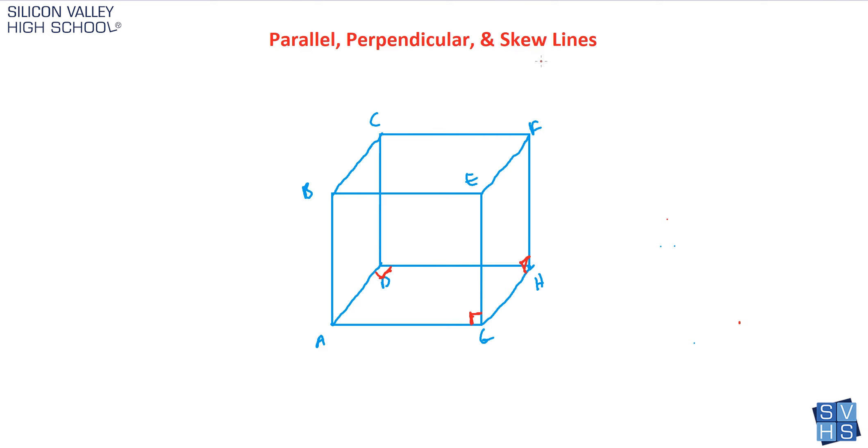Skew lines are weirder. I think everybody's heard of parallel and perpendicular lines, but skew lines means lines that are not on the same plane at all, and therefore, they don't cross at all.